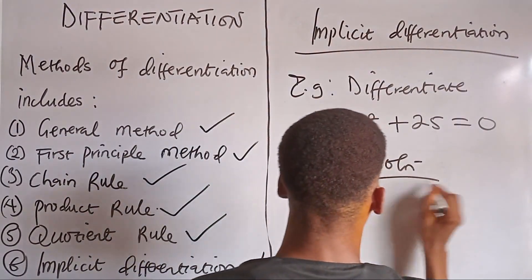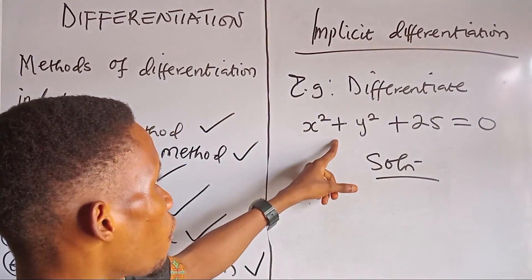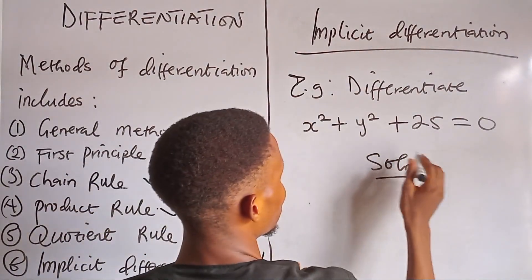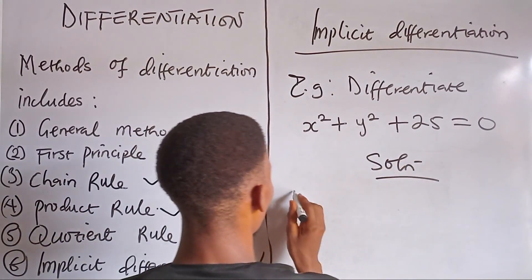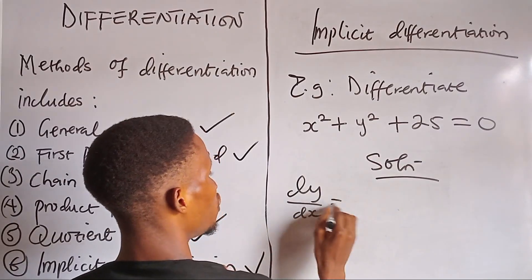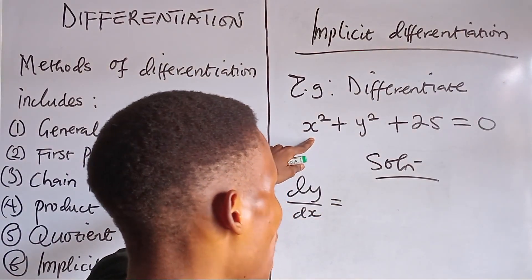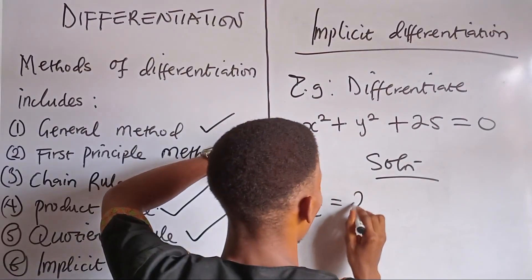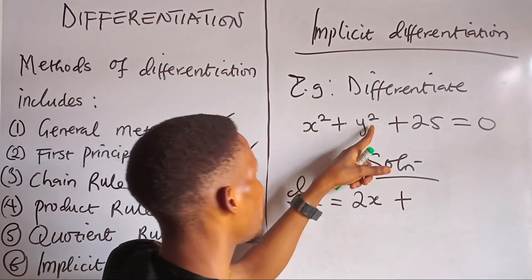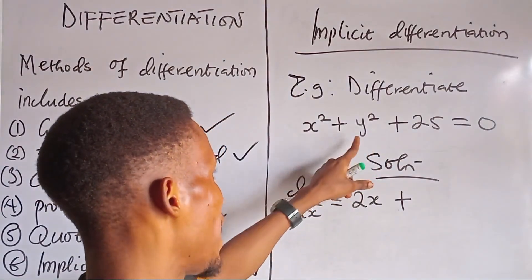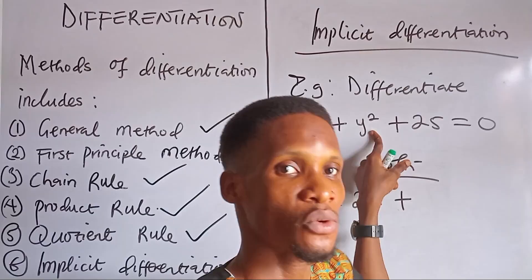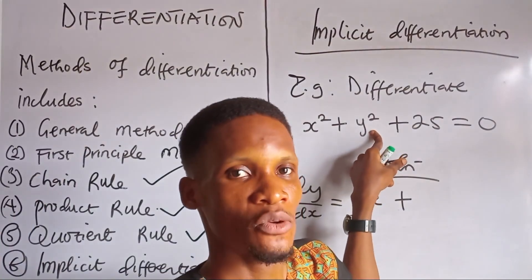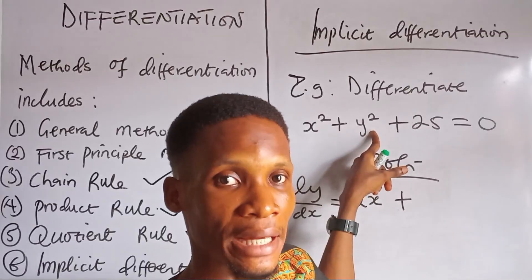We have to differentiate y with respect to x. That is what we are going to have here, because we are asked to differentiate — meaning we are to find dy over dx. So here we differentiate x squared with respect to x, which gives us 2x. Then here, we are differentiating y squared with respect to x. Since we have y here, it's not straightforward because we are supposed to have dy/dx and not just y again.